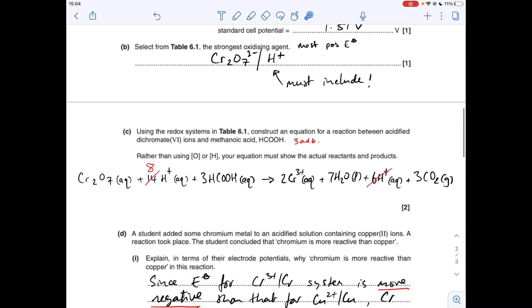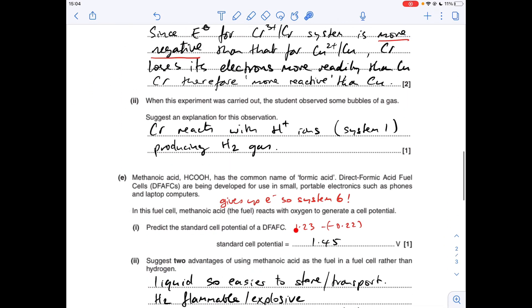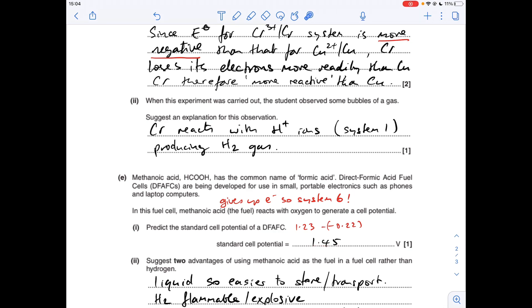So in terms of the cell potential, it's going to be 1.23. That's the oxygen most positive cell potential minus the least positive. So the voltage is 1.45.